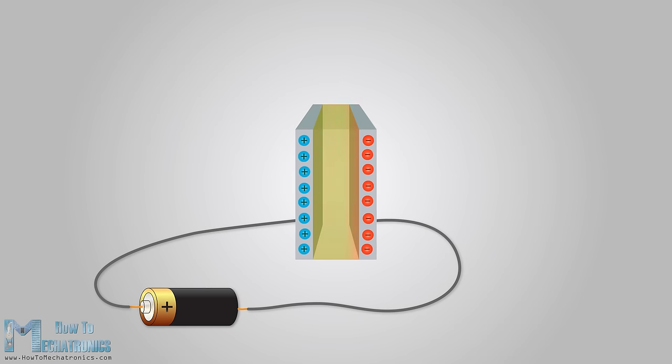So, once the capacitor is fully charged, if we remove the battery, it will hold the electric charge for a long time, acting as energy storage. Now, if we shorten the two ends of the capacitor through a load, a current will start flowing through the load. The accumulated electrons from the first plate will start moving to the second plate, until both plates become electrically neutral again. So, that's the basic working principle of a capacitor, and now let's take a look at some application examples.